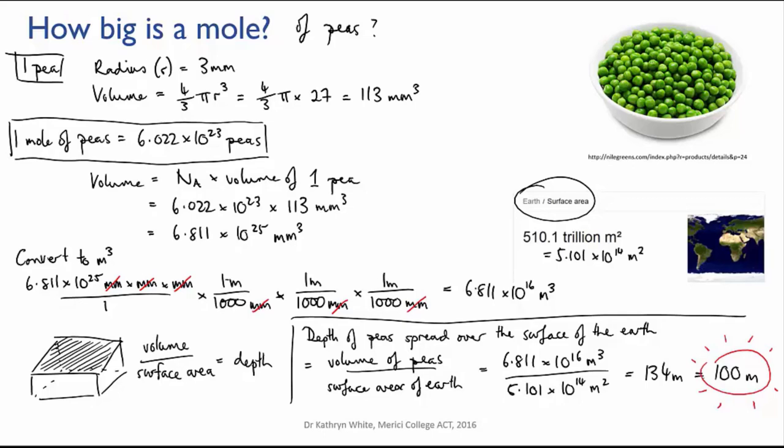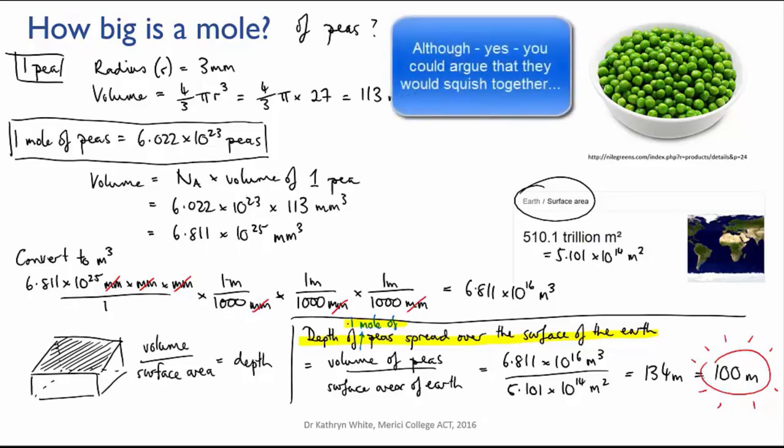So we've worked out that a mole of peas would cover the entire planet to a depth of a hundred meters. And I haven't even taken into account the fact that peas don't pack perfectly because they're spherical, so there would be extra space between them and that would make the layer even thicker.